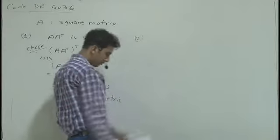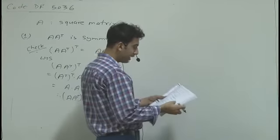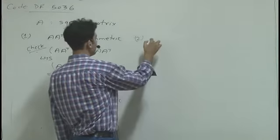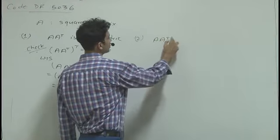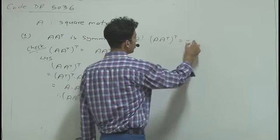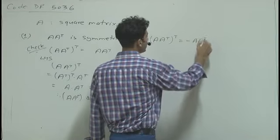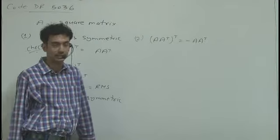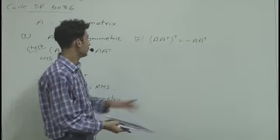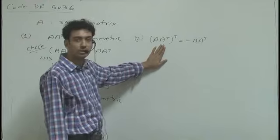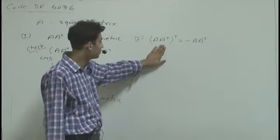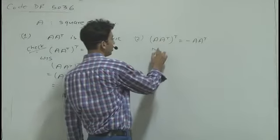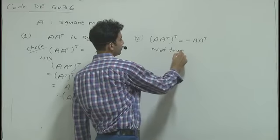For option 2, we check whether AA transpose is a skew symmetric matrix or not. For AA transpose to be skew symmetric, we would need AA transpose whole transpose equal to negative times AA transpose. But this relation is not always true, as we already proved that AA transpose is a symmetric matrix. So option 2 is not always true.